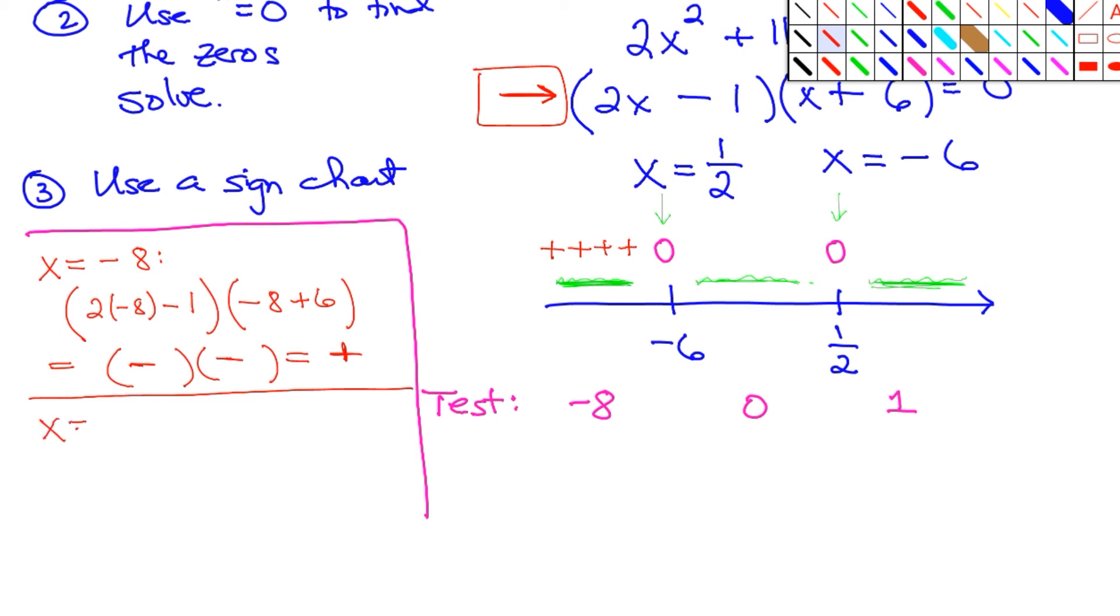Next, I would check x equals 0. That would be (2(0) - 1)(0 + 6). Again, I'm just looking for the sign. This first sign is negative, the second sign is positive. A negative times a positive is negative. So every point on this middle interval is negative.